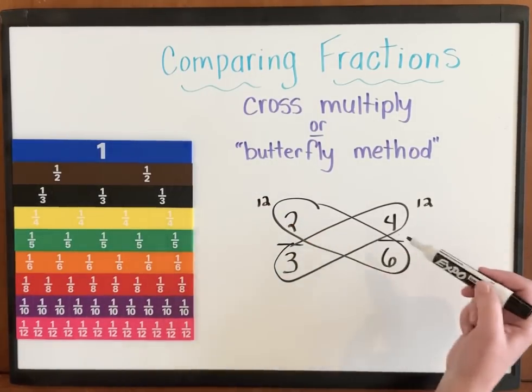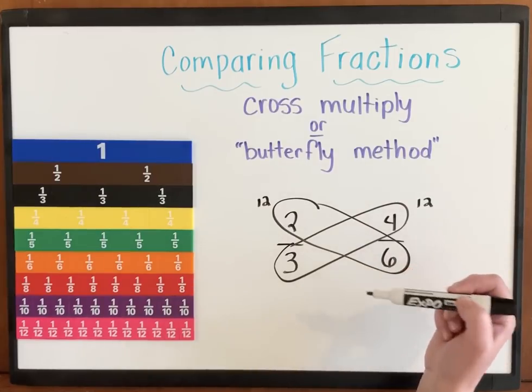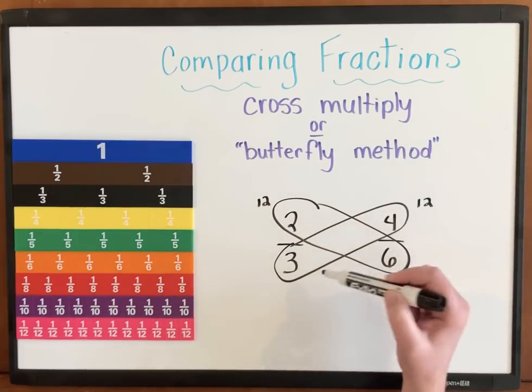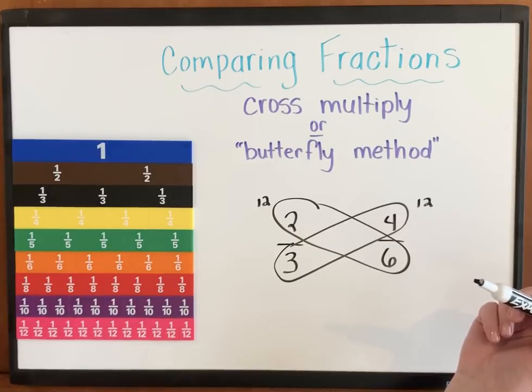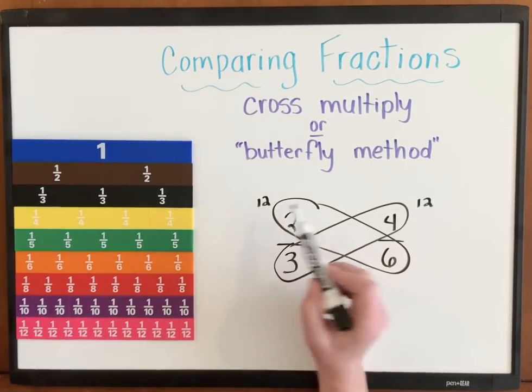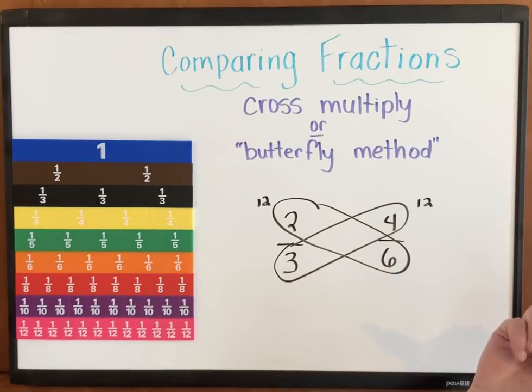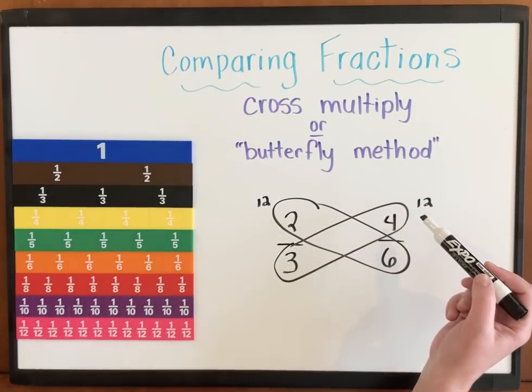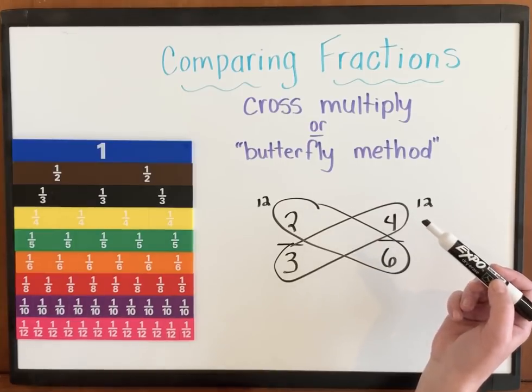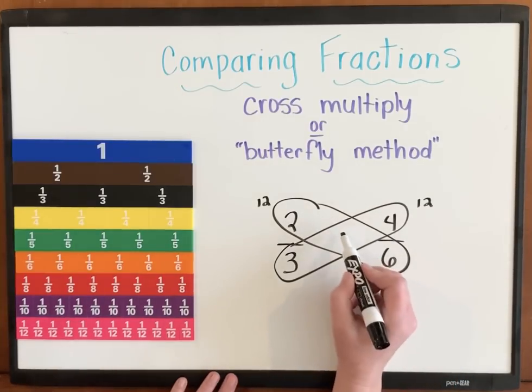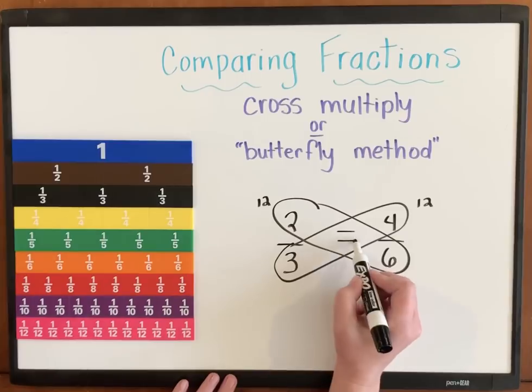And as you can see where the word butterfly method gets its name from, these look very similar to butterfly wings. Now to finish up this strategy and to finish working out this problem, I have two numbers that I've multiplied. I have a 12 and I have a 12. Well, I can compare those but neither number is greater than the other. They're the same. So in this case, this would be an equivalent fraction.